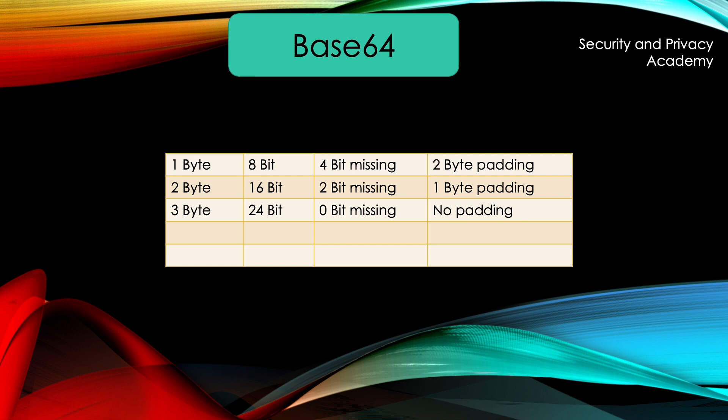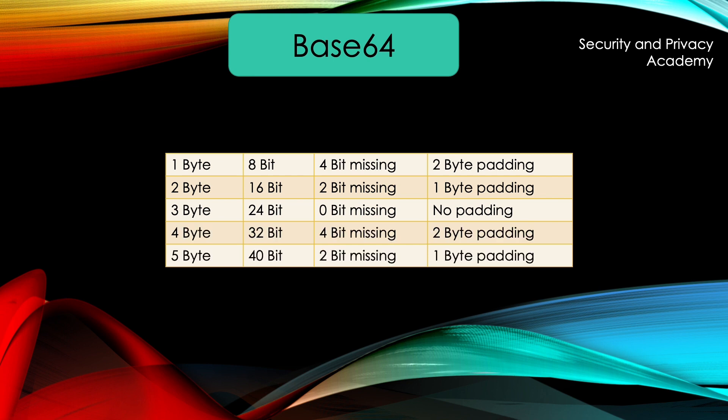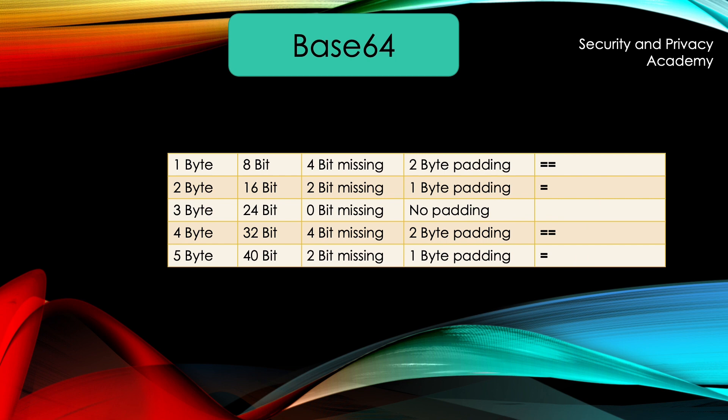Obviously, the same holds true for values above 3, since we only have to reach a byte number which is divisible by 3, such as 3, 6, 9, and so on. To tell the decoder that we used padding, the 0 bytes at the end are not encoded directly, but rather as equal signs. 1 equal sign for 1 byte of padding and 2 signs for 2 bytes.